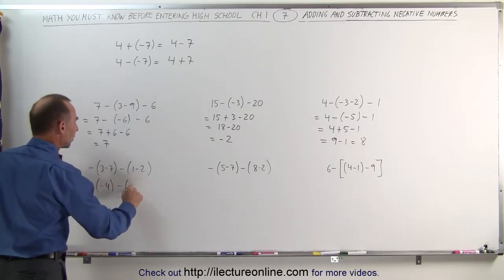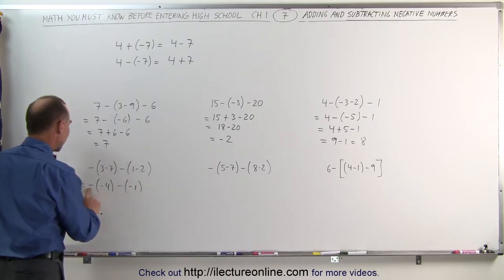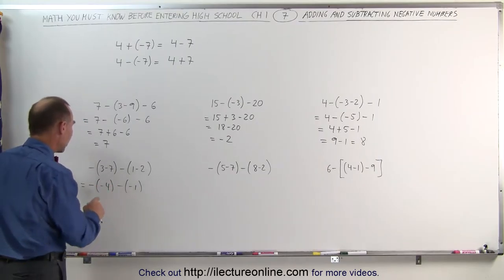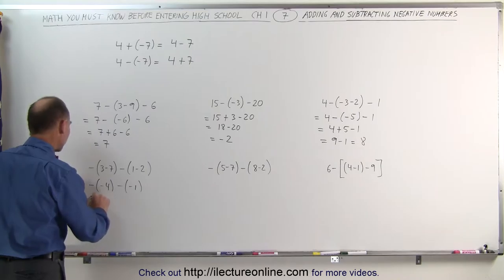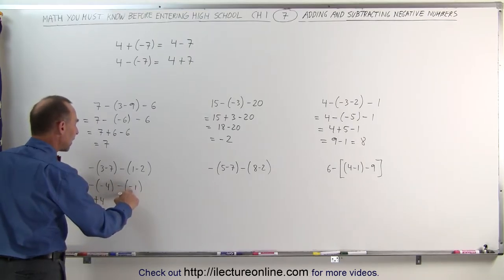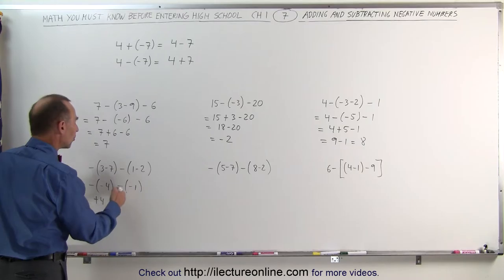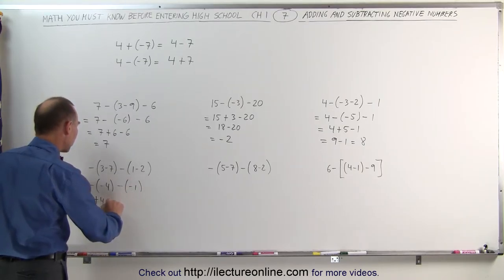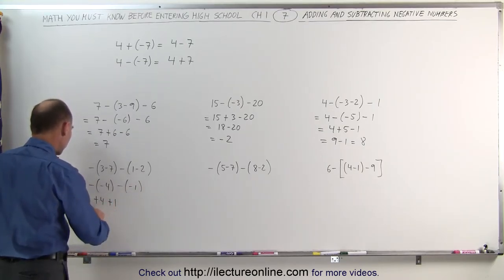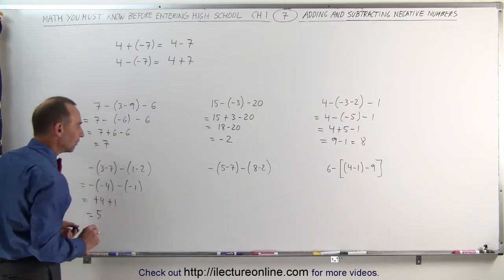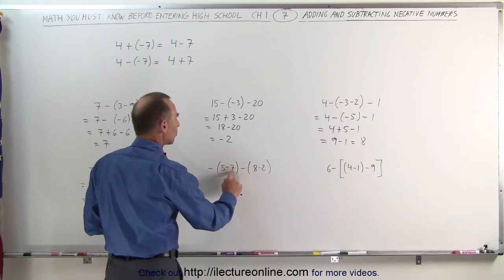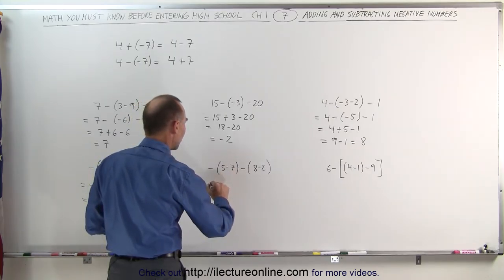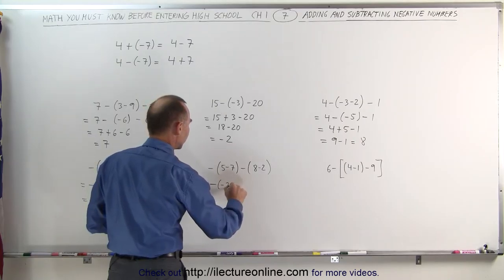Our next example — notice we have two sets of parentheses. We work out what's inside those parentheses first. This becomes minus 3 minus 7 is minus 4, and minus 1 minus 2 is minus 1. Now we apply the negatives. We're subtracting a negative number, which is the same as adding the number. This becomes plus 4, and subtracting a minus 1 becomes a plus 1. So plus 4 plus 1 equals plus 5.